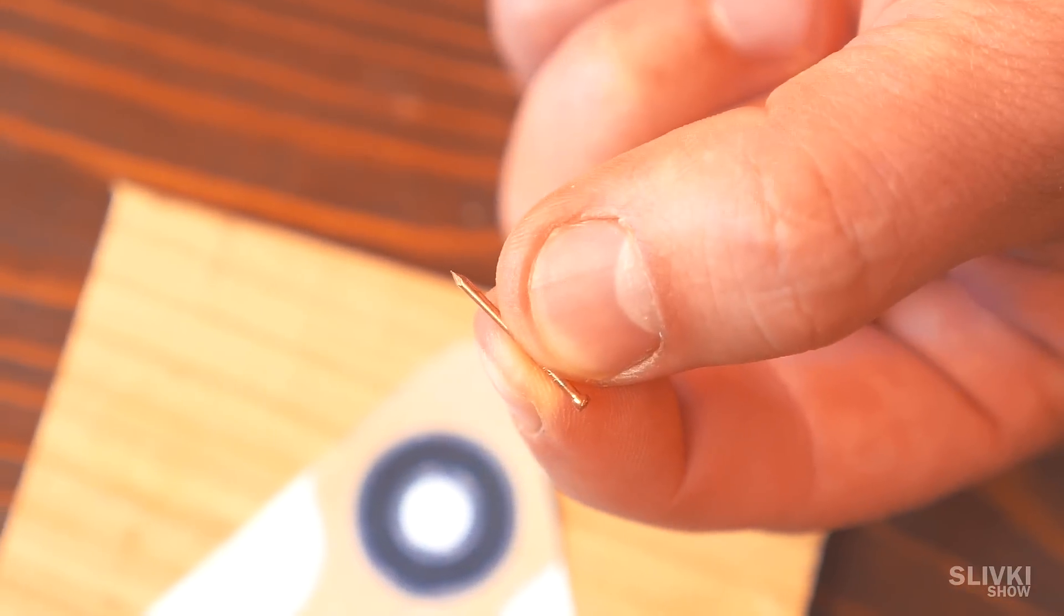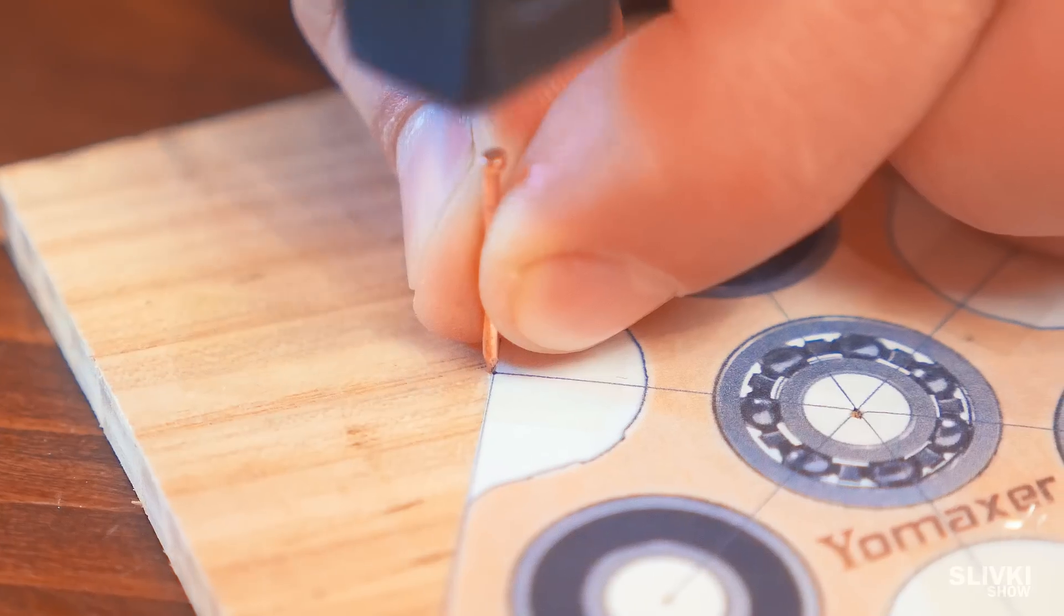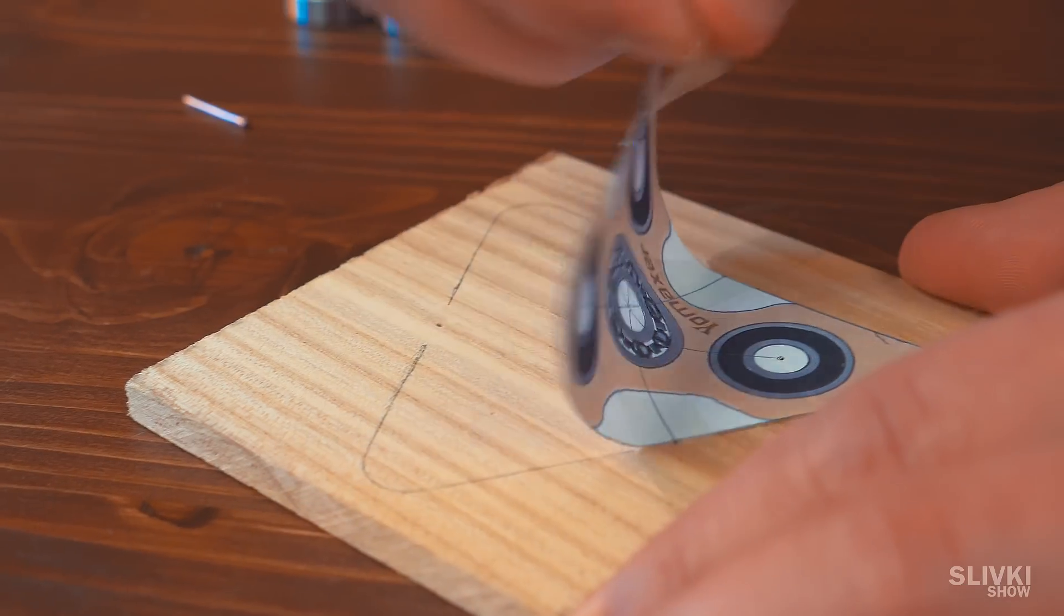Now we need a small nail and using it pierce all central points on wood. Draw an outline with pencil and it should be like this.